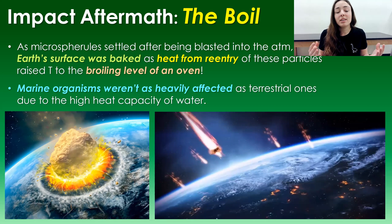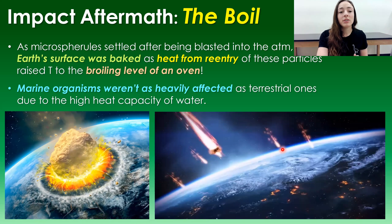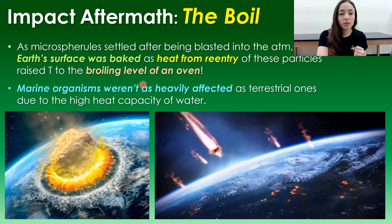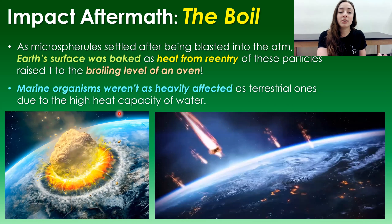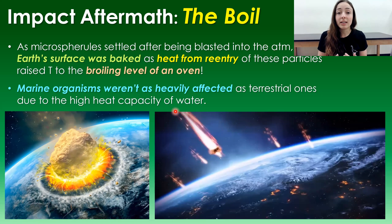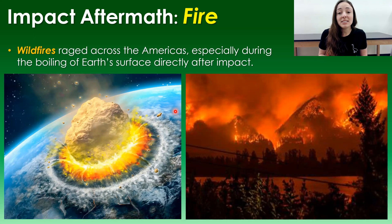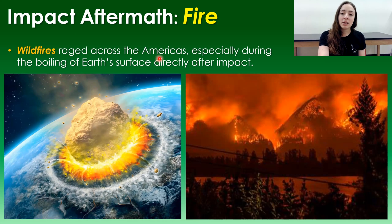The second part of the aftermath was the boil. As microspherials — little rock fragments — settled after being blasted into the atmosphere, Earth was baked momentarily from the heat associated with the reentry of these particles, bringing Earth's surface to the broiling temperature of an oven. Marine organisms weren't as heavily affected by this as terrestrial ones were, because of the heat capacity of water in the large volume of the ocean. This intense heat immediately after impact would also have caused wildfires raging across the Americas, devastating any forest or grassland ecosystems.